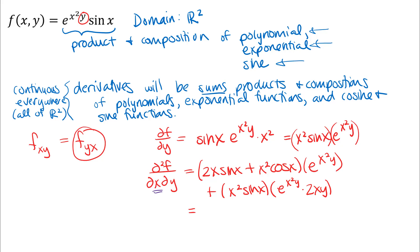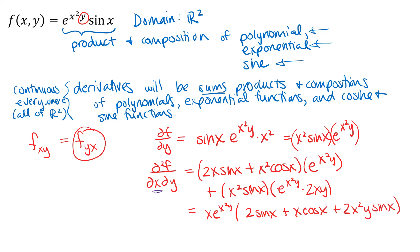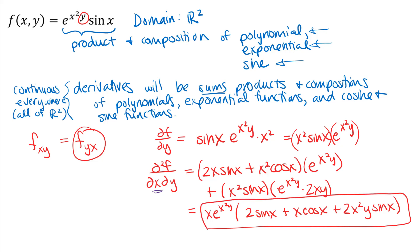Cleaning up, we can factor out e^(x²y) and an x from everything. That leaves x·e^(x²y) times (2sin(x) + x·cos(x)), plus 2x²y·sin(x). That's the mixed second partial derivative. And by Clairaut's theorem, since all derivatives of all orders are continuous everywhere, this single result gives us both mixed second partial derivatives.